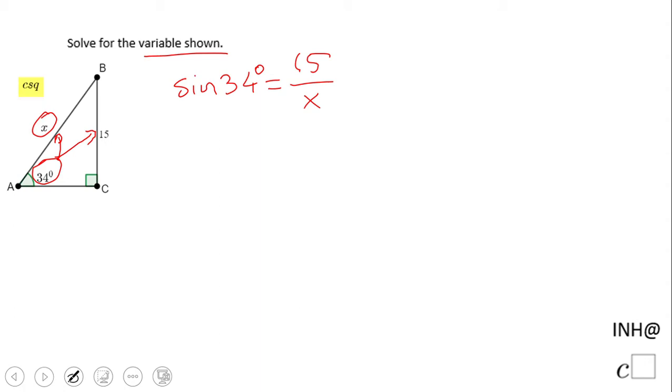Here you have a couple of choices. Some people like to do cross multiplication. 1 times 15 equals X times sine of 34 degrees. That is 15, obviously, and here we have X times sine of 34. Then we're going to solve for X, so we divide by sine of 34.